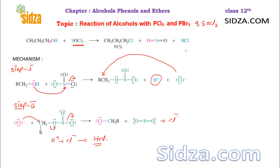The three products are alkyl halide, sulfur dioxide (a gas), and HCl (also a gas). From an industrial point of view, this reaction is considered the best for making alkyl halides because the byproducts SO2 and HCl easily escape in the gaseous state, leaving behind the pure alkyl halide.